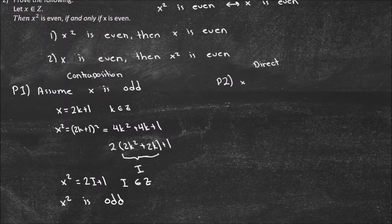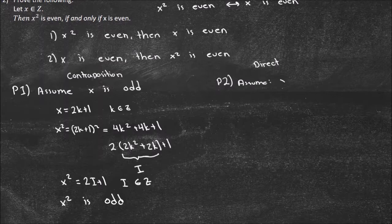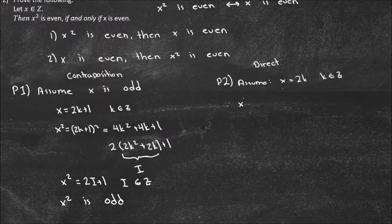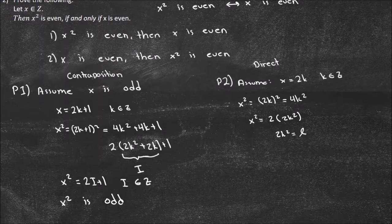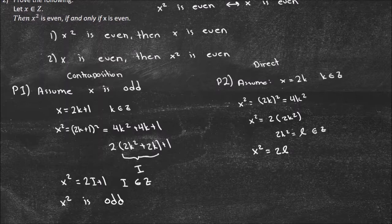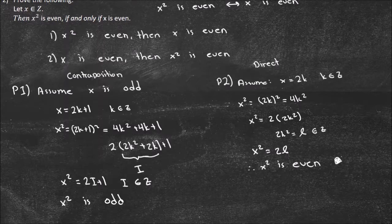For the direct proof, we just assume P is true, so assume X is even. I'll write it in math notation: assume X equals 2K, where K is an element of Z. Now I'm just going to try to show that X squared is even. So X squared equals (2K) squared, which equals 4K squared. I can factor out a 2: X squared equals 2 times 2K squared. I'll let 2K squared equal L, so X squared equals 2L. I know L is an element of Z because I took an integer, squared it, and multiplied by 2. Therefore, X squared is even — proved directly. I've shown both sides, so the entire proof is true.